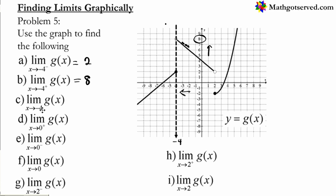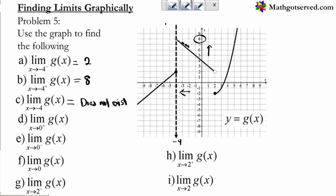So what is the limit as x approaches negative 4? This is a double-sided limit. If both one-sided limits were the same answer, that would be the limit. But since they are approaching different values — 2 from the left and 8 from the right — the limit does not exist. The left-hand and right-hand limits must be the same in order for the limit to exist.